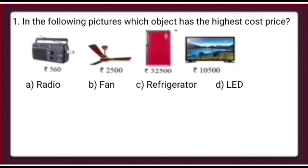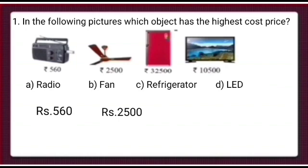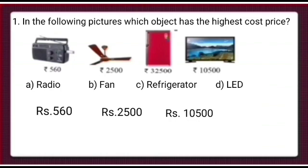We will arrange these cost prices in ascending order. The lowest one is Rs. 560, next is Rs. 2,500, then Rs. 10,500, and the highest one is Rs. 32,500. Now children, we will look for the correct answer. The cost price of radio is Rs. 560, fan is Rs. 2,500, and fridge is Rs. 32,500 — this is the highest cost price. So the answer is fridge, that is, part C is the correct option.